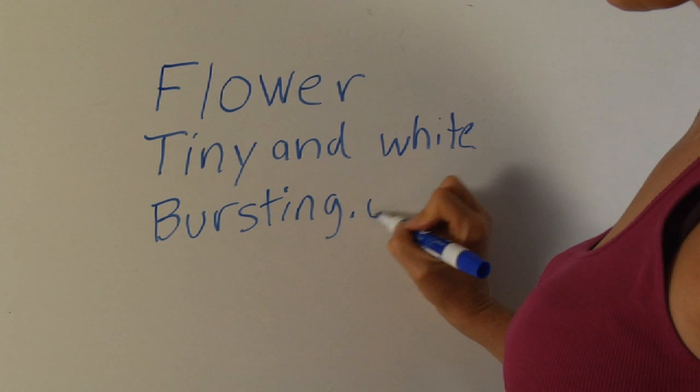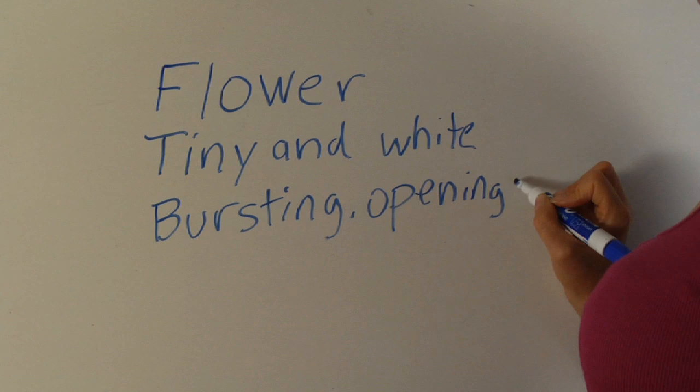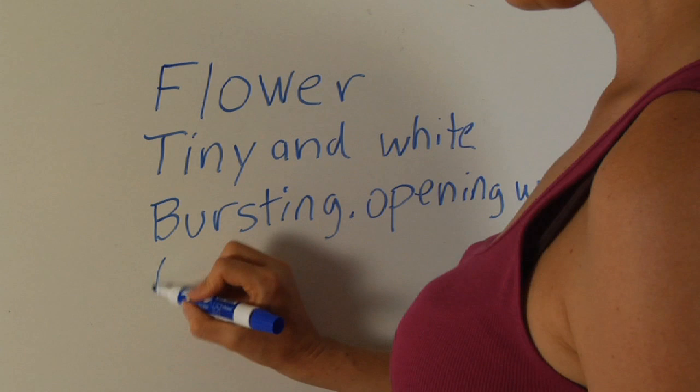The next line is going to be six syllables that are verbs describing this first word: bursting, opening wide, flower.